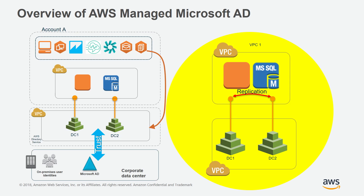Previously, customers could not domain-join EC2 instances from multiple accounts and VPCs seamlessly to a single AWS Managed Active Directory. You had to deploy Managed Active Directory in each account and VPC or manually domain-join the EC2 instances to the directory. This increased the complexity and management, making it more difficult and time-consuming to deploy directory-aware workloads into AWS.